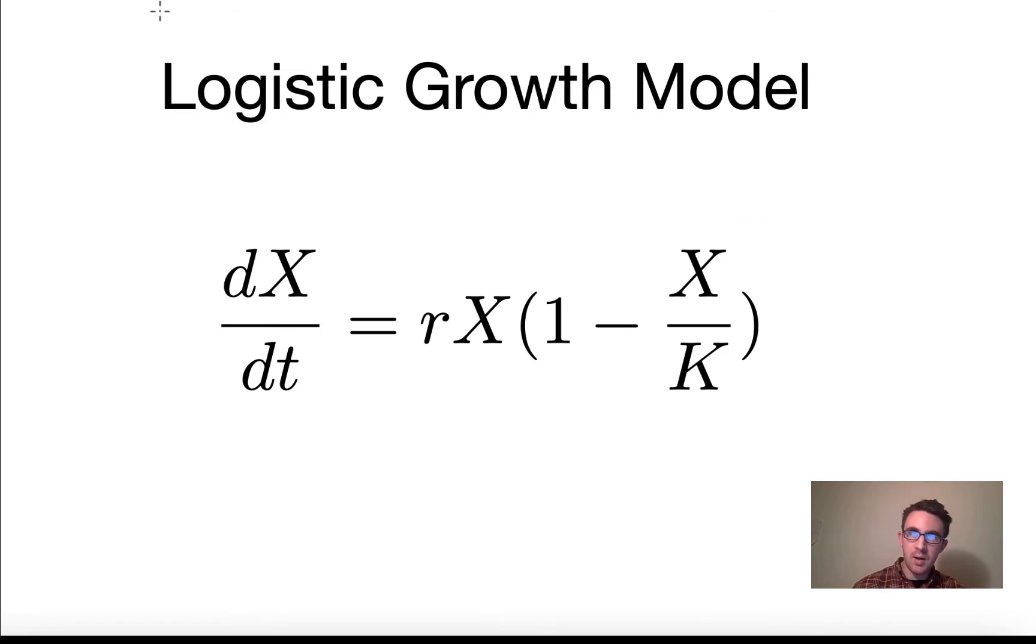Before we get into all the math, let's talk a little bit about how a cell population actually grows. So we start off with one cell, and then it divides and we get two cells, and then these divide and we get four cells, right? And then eight. And so on and so on.